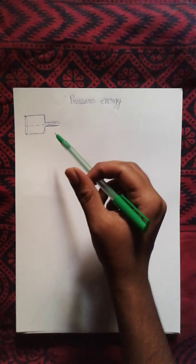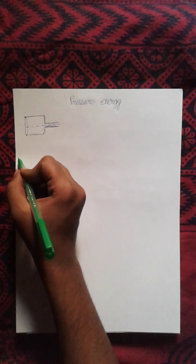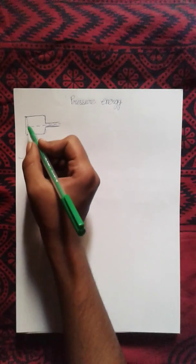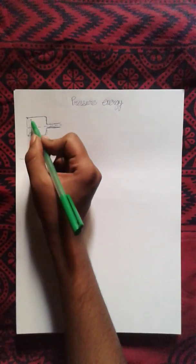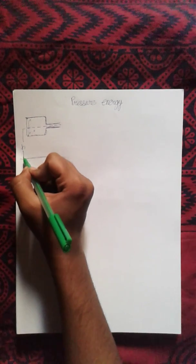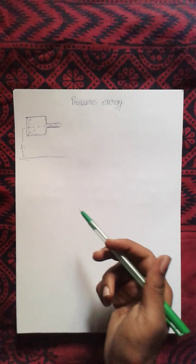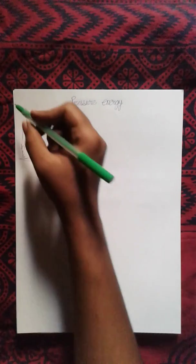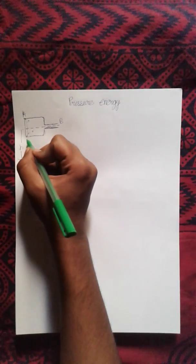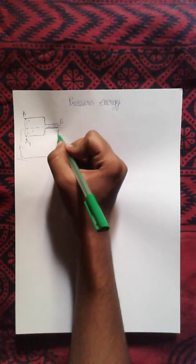At any level from the axis, let us say this is ground, so we consider the height of molecule here or here at this level with the height from axis of tube. Now let this be point A and this be point B. Area of cross section here be A1 and here be A2.